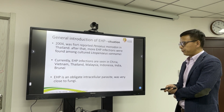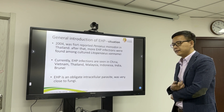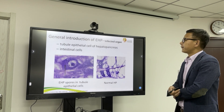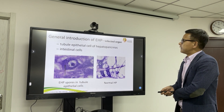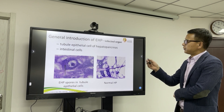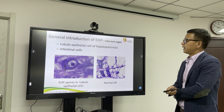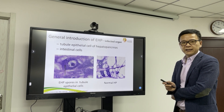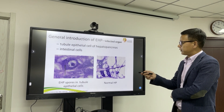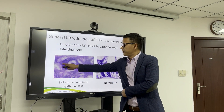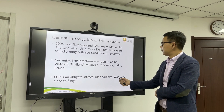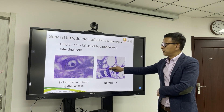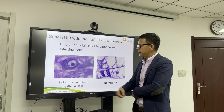EHP is an obligate intracellular parasite, which means it lives inside the cell and is very closely related to fungi. EHP infects the tubular epithelial cells of the hepatopancreas and the intestinal cells. Here we can see a normal hepatopancreas and one infected by EHP.